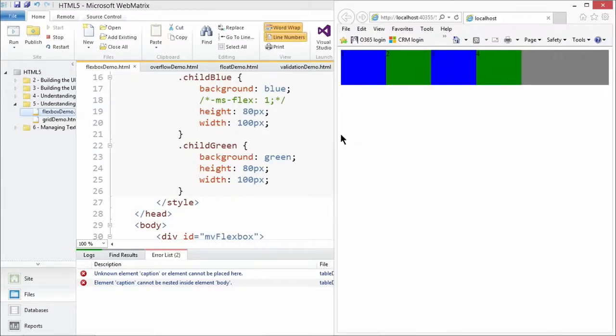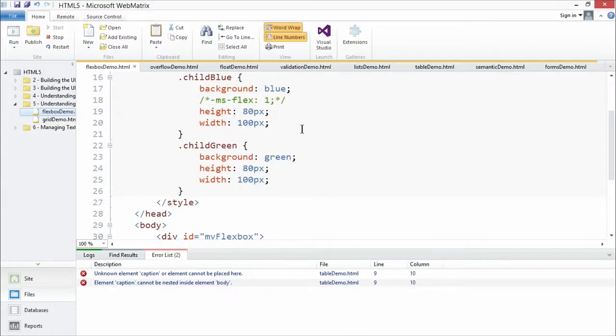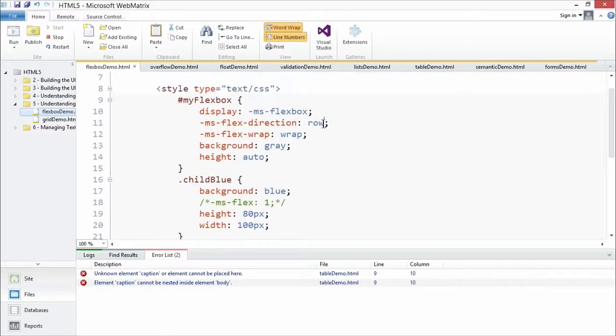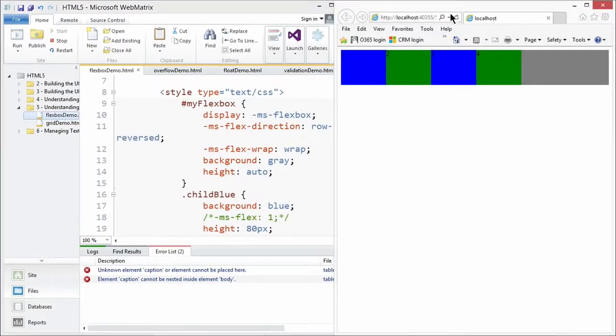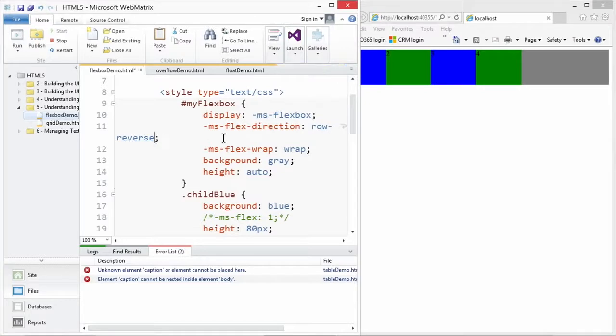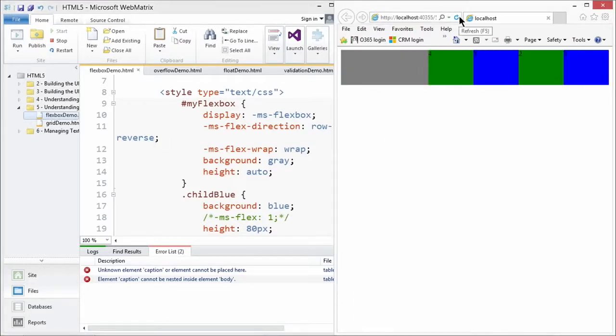Let's go ahead and let's mess with this and see what happens if we apply the row reversed value to our Flex direction property. So I'm going to go ahead and refresh this page now. Row reverse. And now we've reversed the order of our Flex boxes. So now we're going from four, three, two, one.